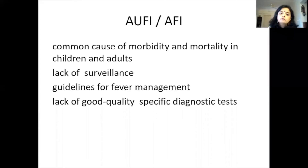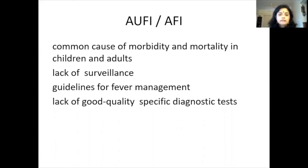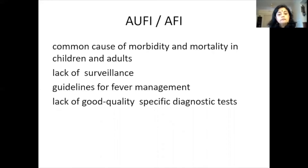AUFI is a common cause of morbidity and mortality in children and adults. There is a lack of surveillance, especially in India, because of our geographical and seasonal variation — dengue is already present in some parts of the country, while elsewhere it's typhoid or something else. Because of the vast differences across our country, there is a lack of surveillance, variable guidelines for fever management, and a lack of good quality specific diagnostic tests for these febrile illnesses.